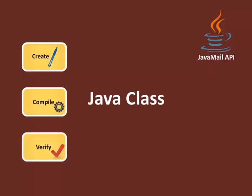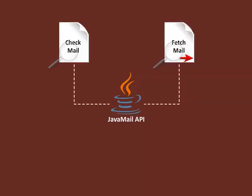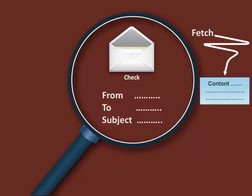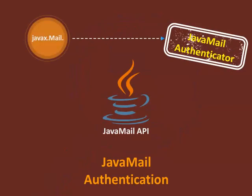The next two important processes are checking and fetching. While checking an email, open the respective folder and only check the header of each message — that is, from, to, and subject. While fetching an email, along with the header, also read the content by recognizing the content type. For authenticating a mail, the JavaMail Authenticator needs to be imported from the javax.mail package before creating a Java class.